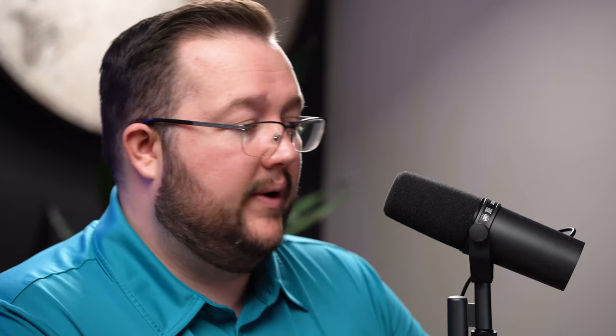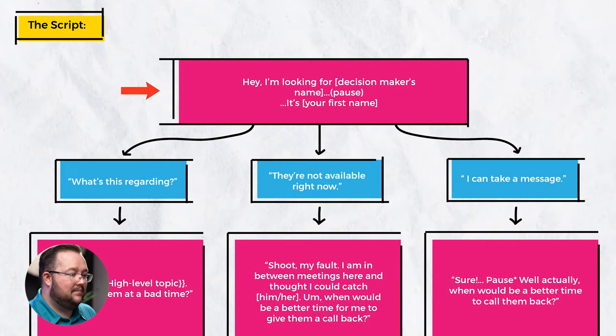Let's talk script for a second. This gatekeeper script is one I've been using for years and I haven't found anything better. It is a little tricky to deliver, so I'm going to read through it and explain why we deliver it that way. Here it is: 'Hey, I'm looking for Kevin.' Pause. 'It's Kyle.' That's it.